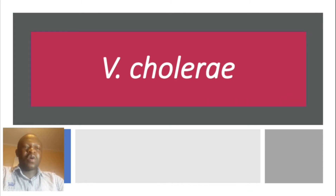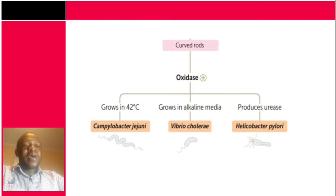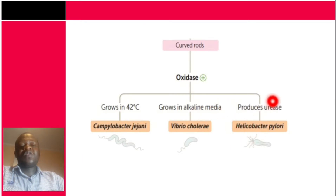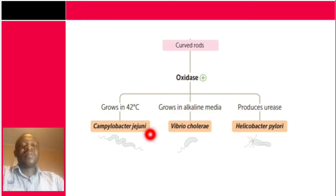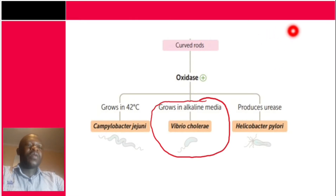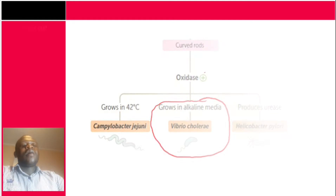Welcome back. In this video we're going to talk about Vibrio cholerae. This is the second part — in the previous video we covered Helicobacter pylori. These gram-negative bacteria are all oxidase positive. What differentiates them: H. pylori produces urease, Vibrio cholerae grows in alkaline media, and Campylobacter jejuni grows at 42 degrees Celsius. You should watch the H. pylori video first — click the link in the top right corner.